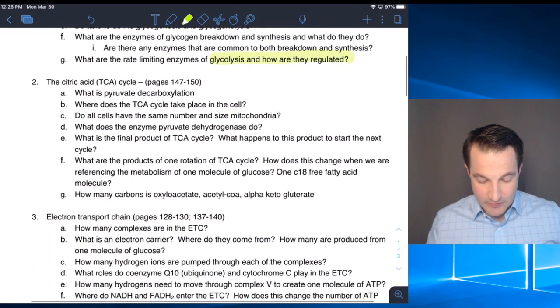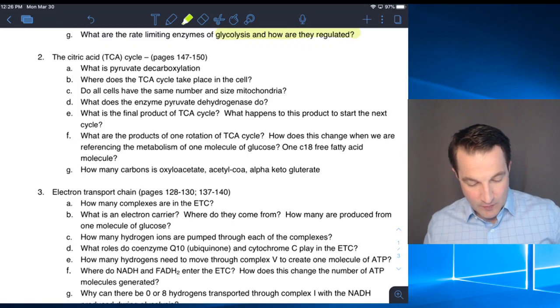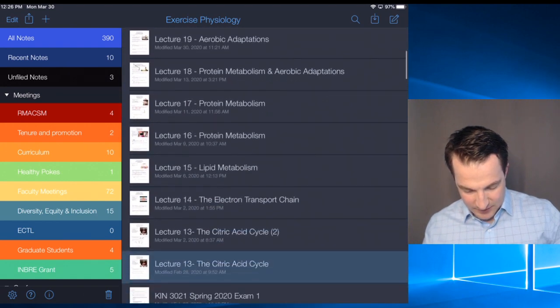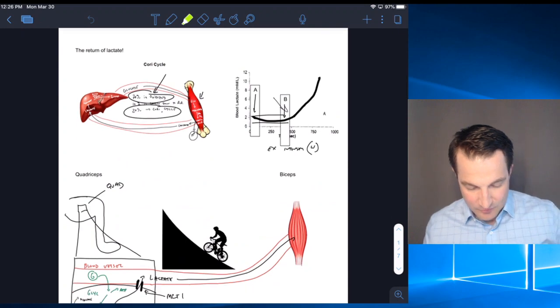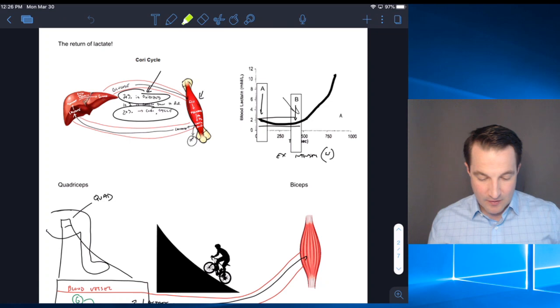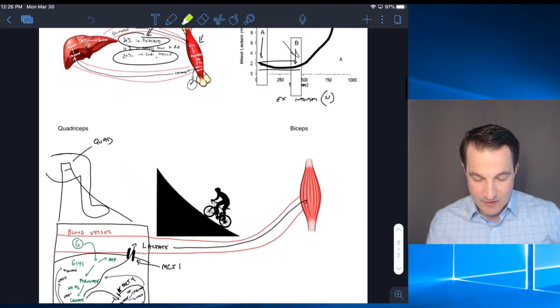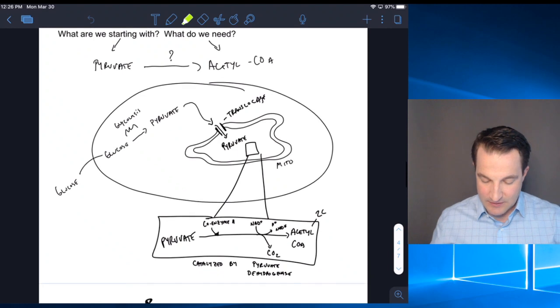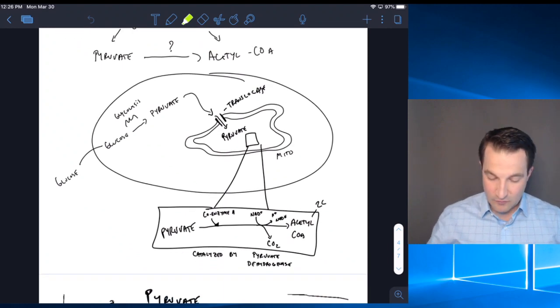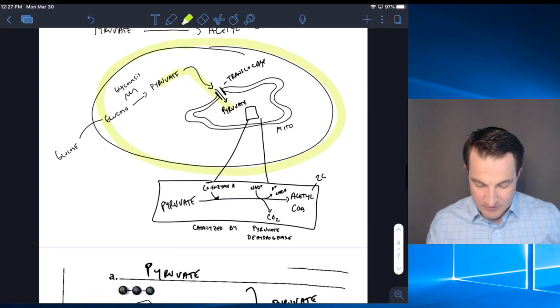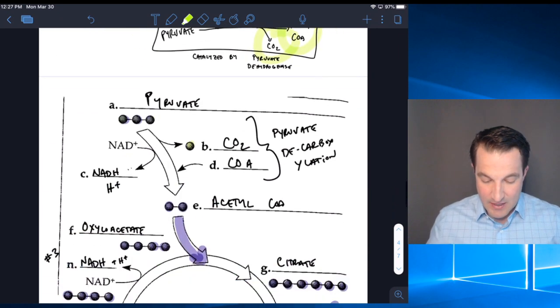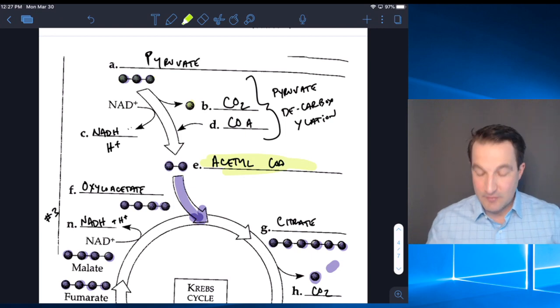For the citric acid cycle, pyruvate decarboxylation and TCA cycle take place in the mitochondria. If we have this picture of the cell, we see that pyruvate moving into the cell. That pyruvate is first going to be decarboxylated, we get rid of that one carbon dioxide, and that's how we get our acetyl-CoA. Our acetyl-CoA is then what goes into our Krebs cycle.